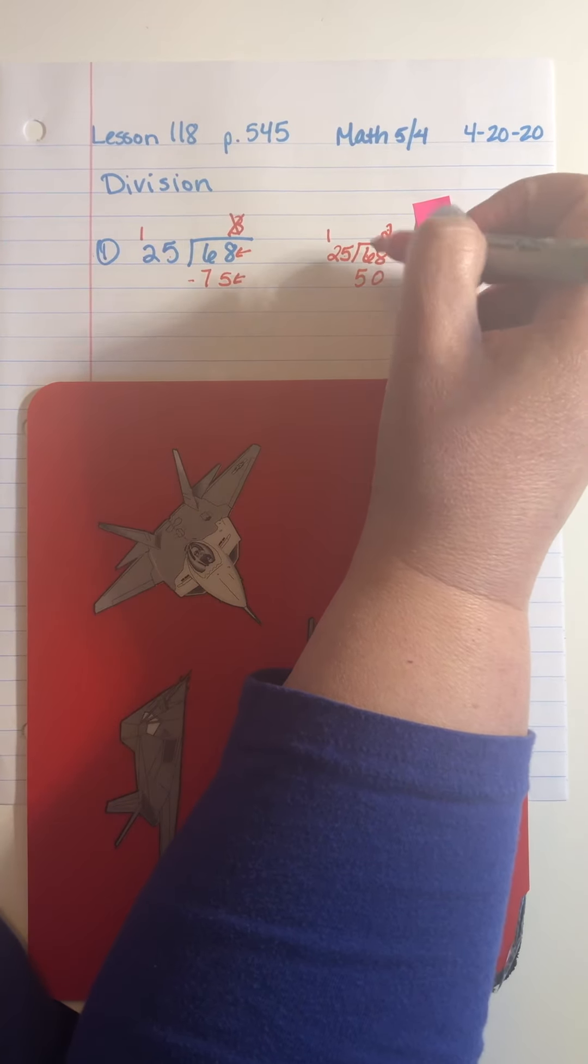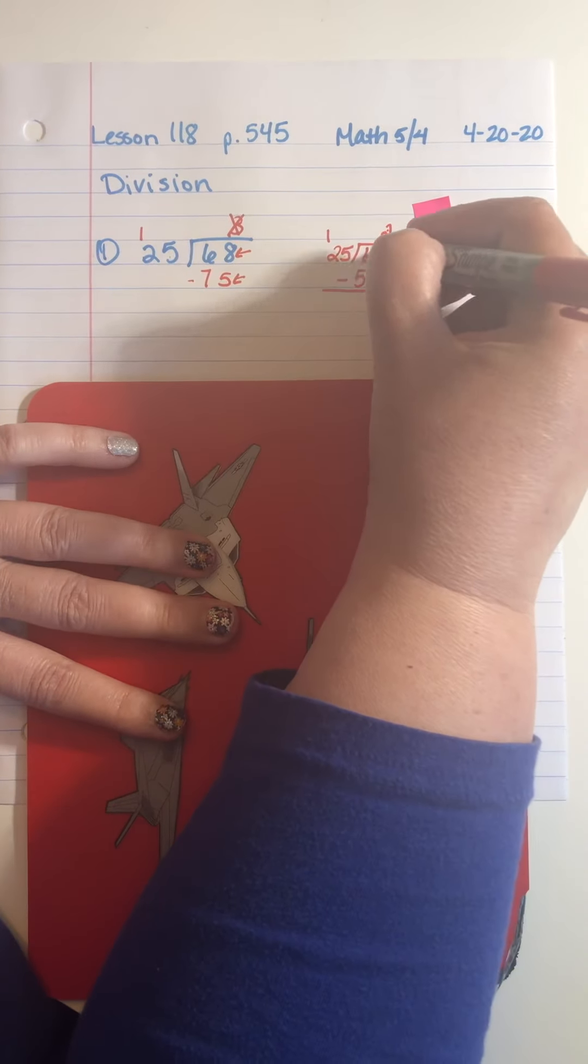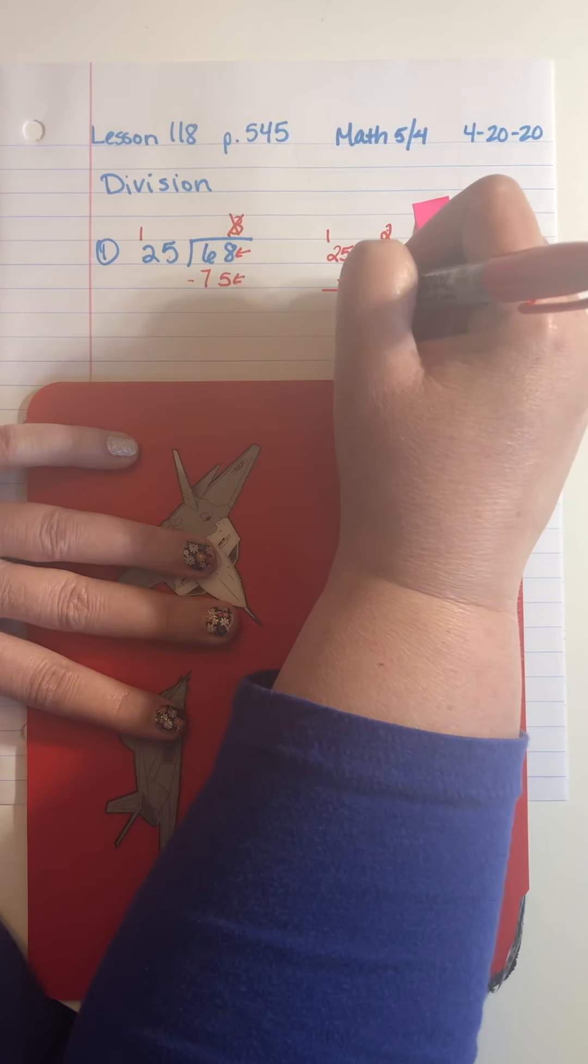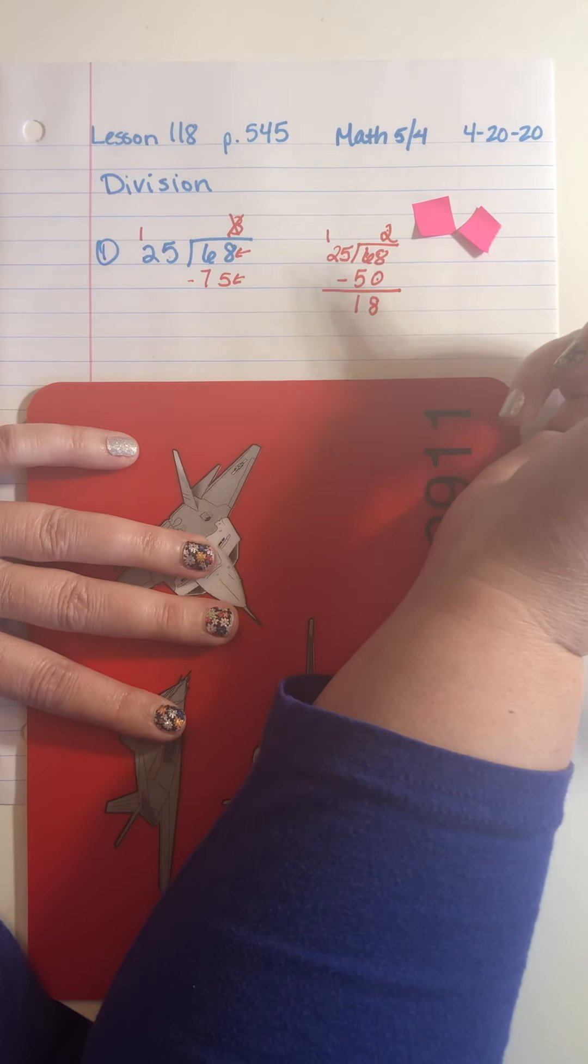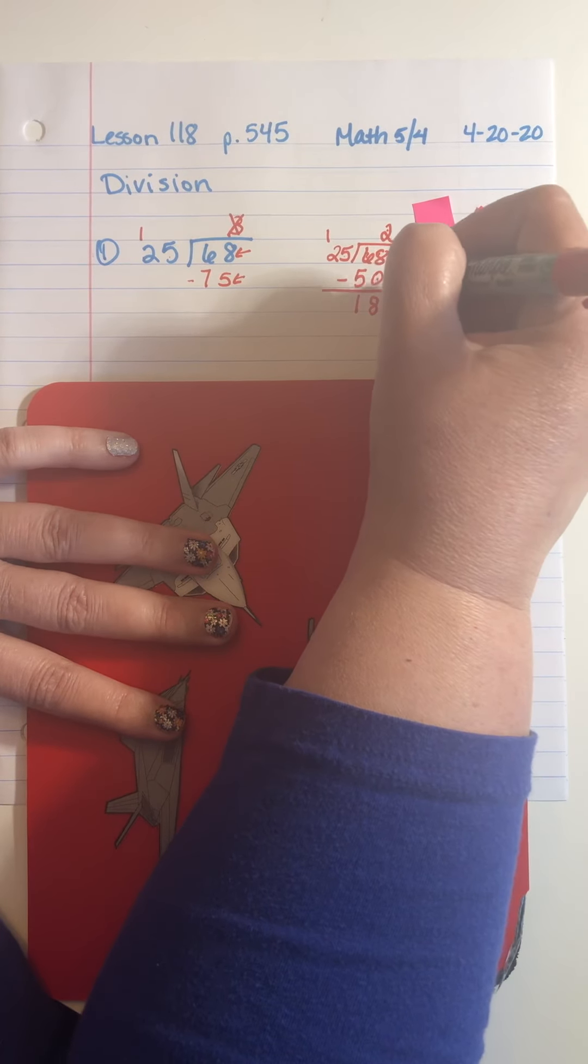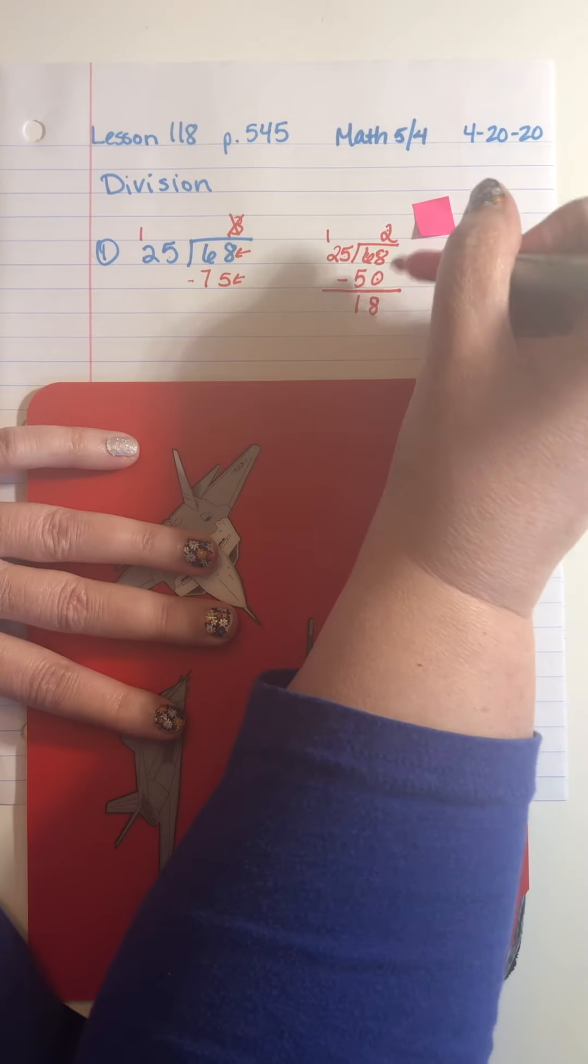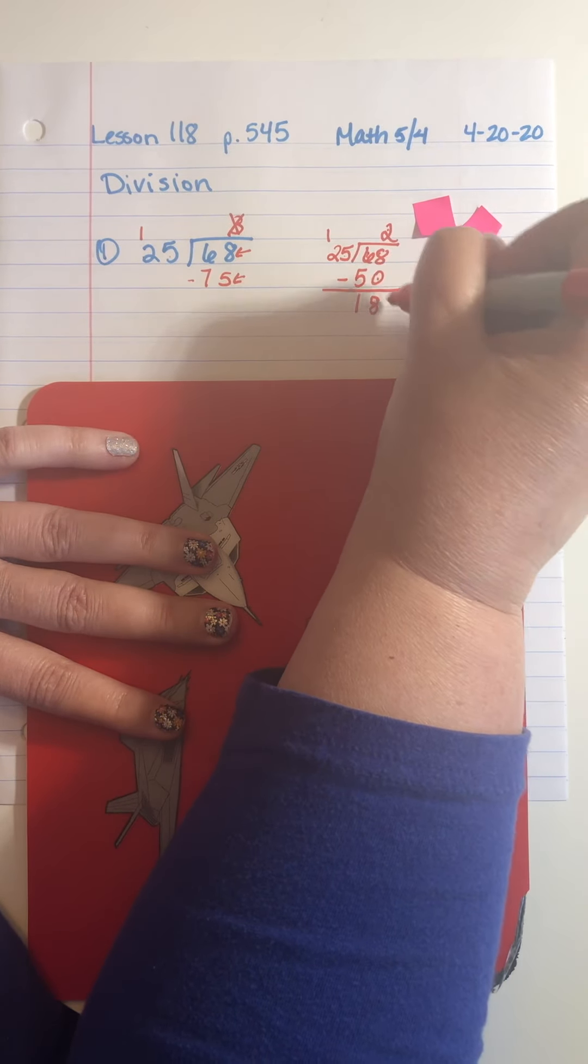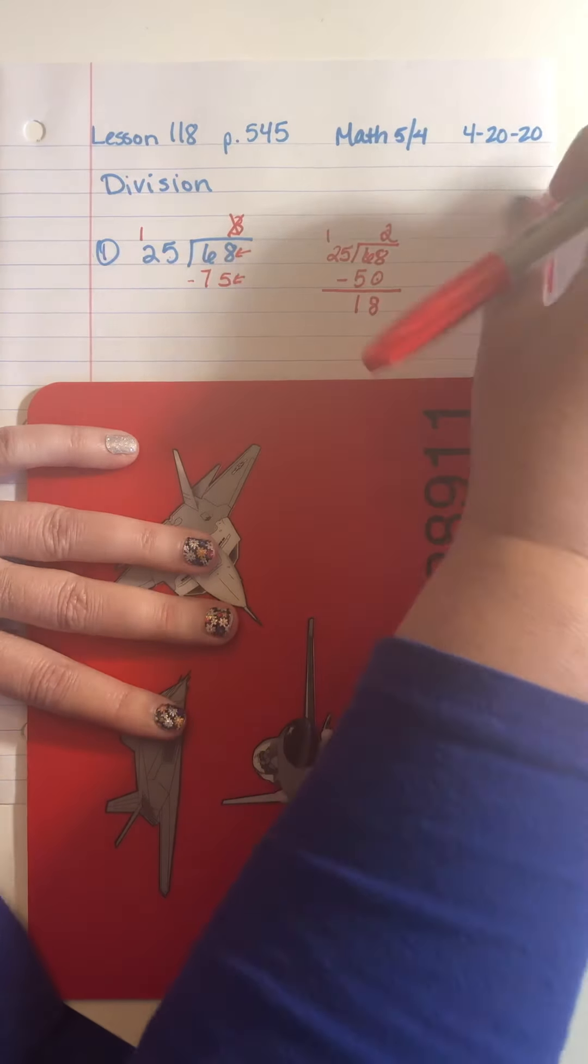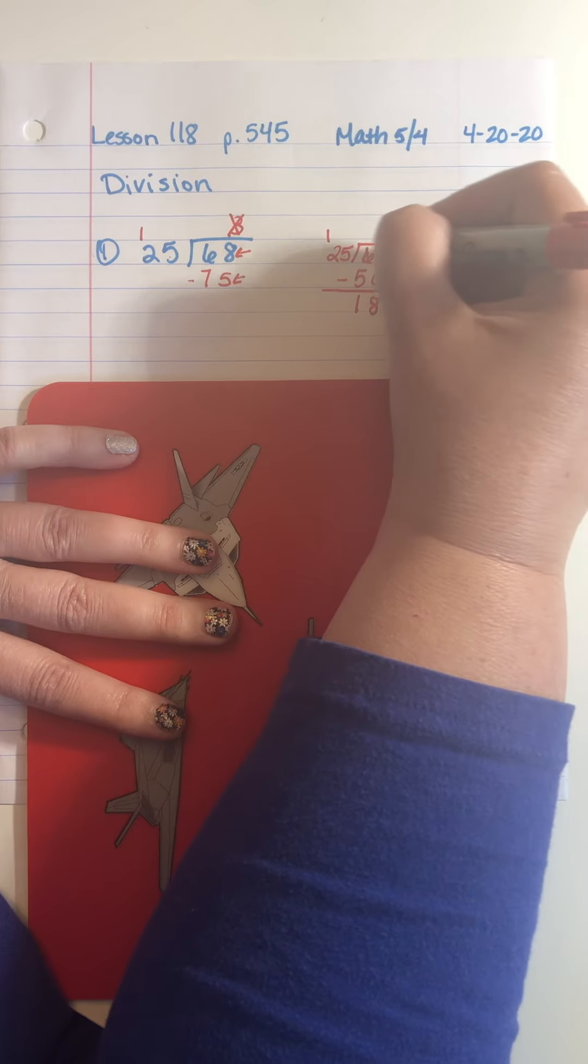So I'm going to go ahead and do that. Eight minus zero is eight. Six minus five is one. Now step three of my division process is to bring down, but I don't have anything to bring down. So my 18 is my remainder. So my answer for this problem is two remainder 18.